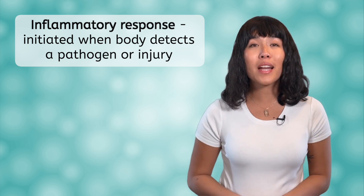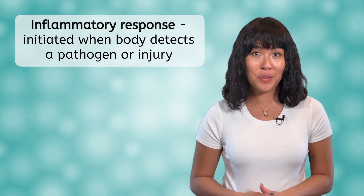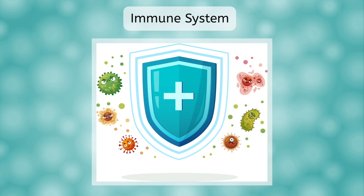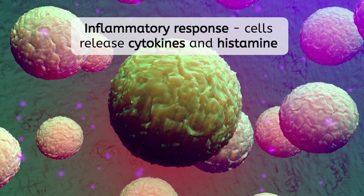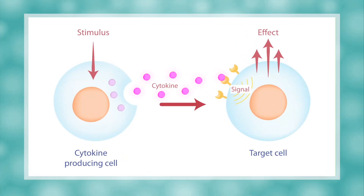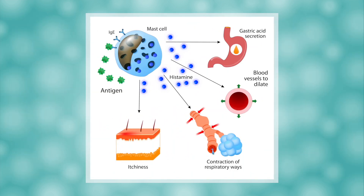The second line of defense is known as the inflammatory response. The response is initiated when the body detects the presence of a pathogen or injury to tissue. For example, if you get a cut on your skin, it quickly turns red and becomes swollen. This is your immune system rushing into action with the inflammatory response, because there is a risk that pathogens on the outside of your skin are about to slip inside your body through the cut. During the inflammatory response, the immune system releases a variety of chemicals, including cytokines and histamine. Cytokines are small signaling proteins that regulate the activity of white blood cells and help orchestrate the body's overall immune responses.